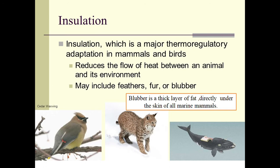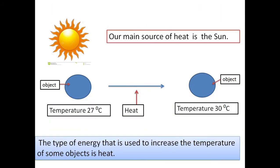Our main source of heat and light is the Sun. Now, if you take an object at 27 degrees Celsius and want to increase the temperature to 30 degrees Celsius, you have to supply a type of energy called heat. If you supply heat, the temperature increases. Heat is the type of energy used to increase the temperature of objects.